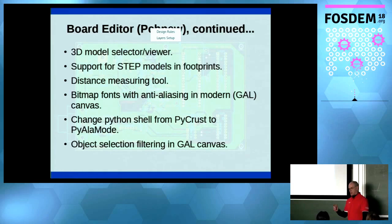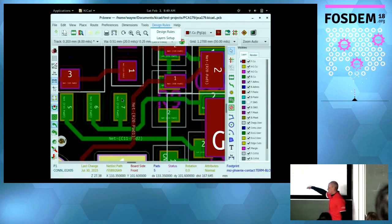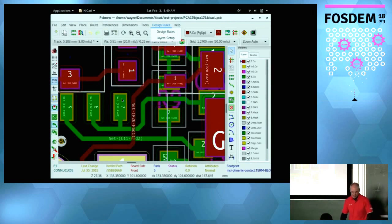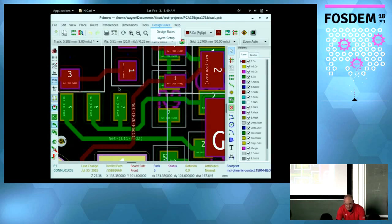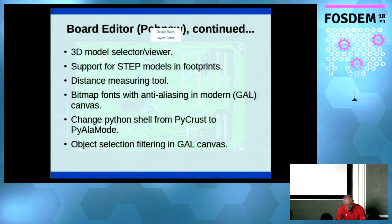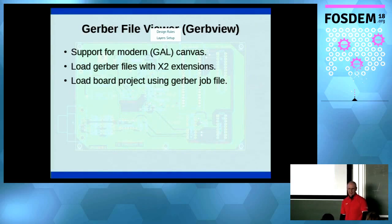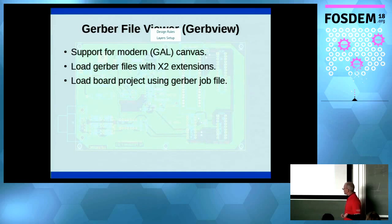We've changed the bitmaps — there's now anti-aliasing for the text labels in the board view. If you have the graphics power to pull it off, go ahead and enable it and you'll get nicer looking fonts. We also have object selection filtering — you can hold Shift or Control to select individual parts, and this only works in the GAL/modern canvas.